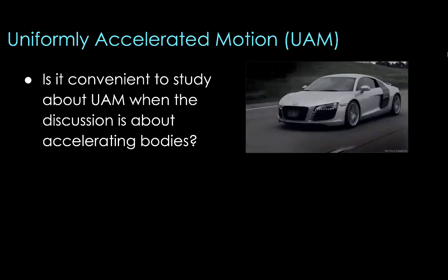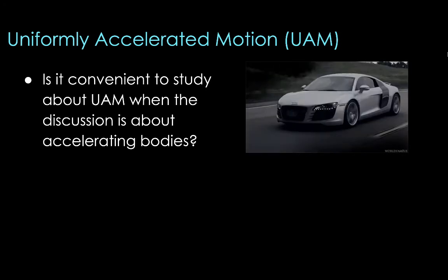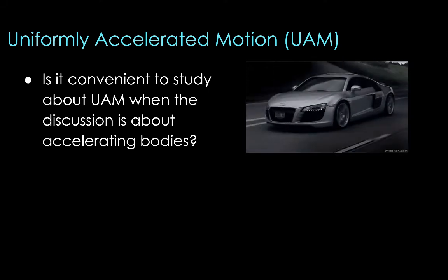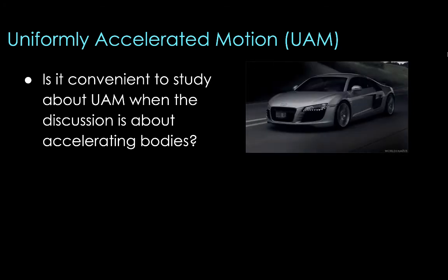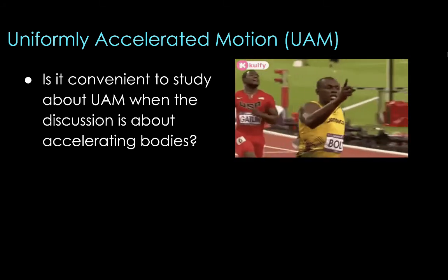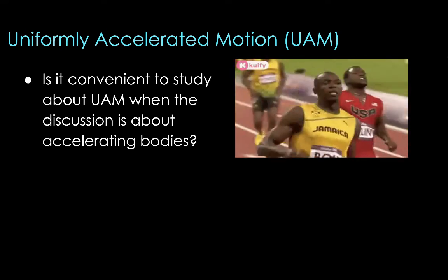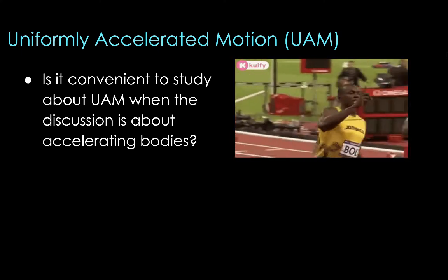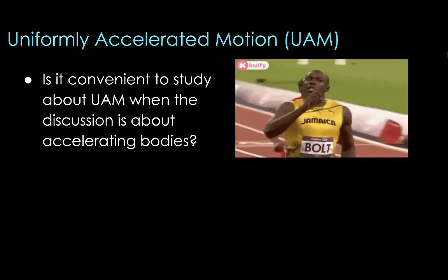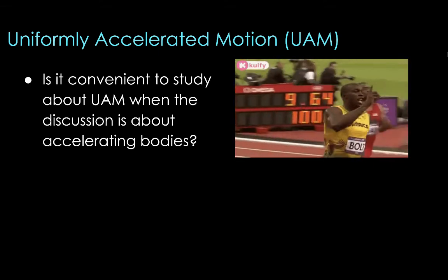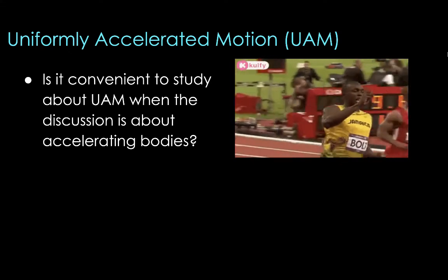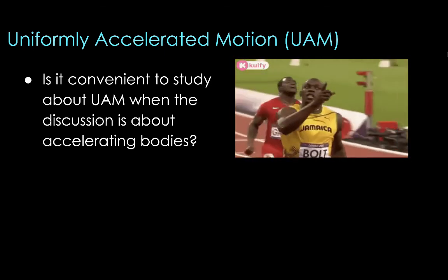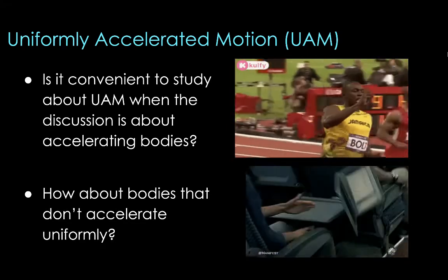It depends on the car's purpose, so cars are engineered for a certain purpose and their engines give them a specific rate of acceleration. The same goes for human beings — humans don't accelerate at the same rate. Some people can accelerate faster than others, especially athletes for whom running is their sport. The ability to accelerate varies from person to person because of different training, different experiences, unique natural capabilities, and natural agility. Their training also has something to do with their ability to accelerate.